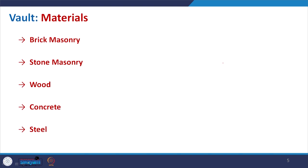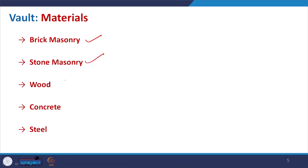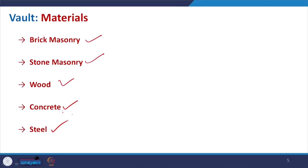Coming to materials, the vault may be made of brick masonry or stone masonry. Sometimes wood has been used. After the invention of concrete, many such structures were made with lighter thickness and larger spans. Steel is also being used to take the form of a vault.